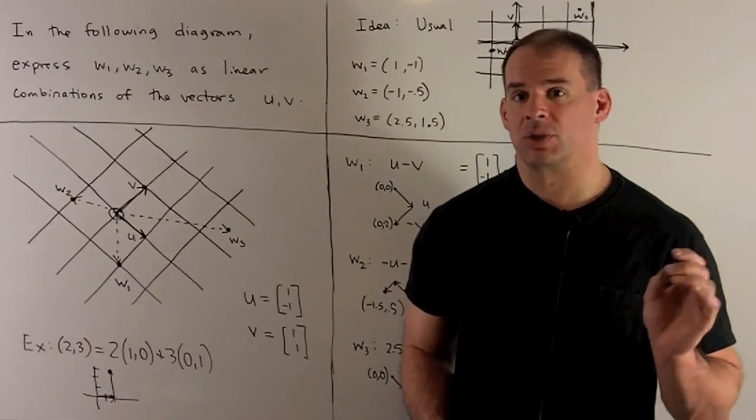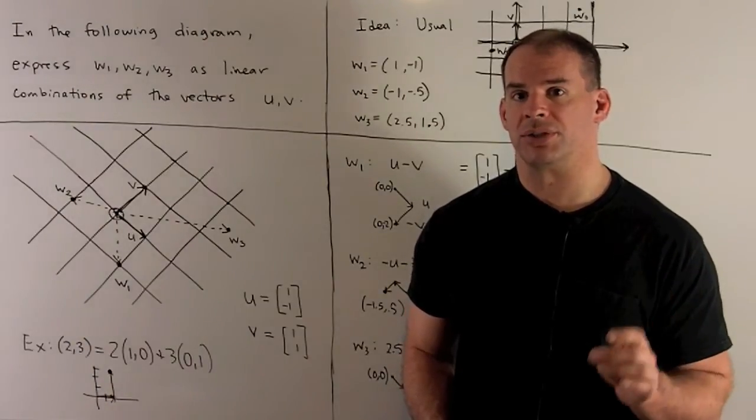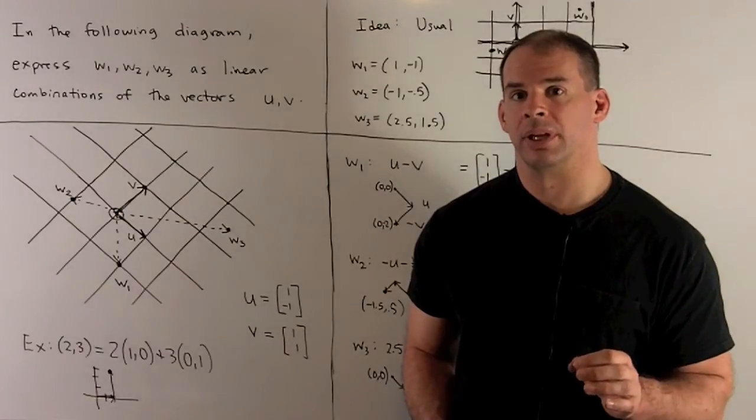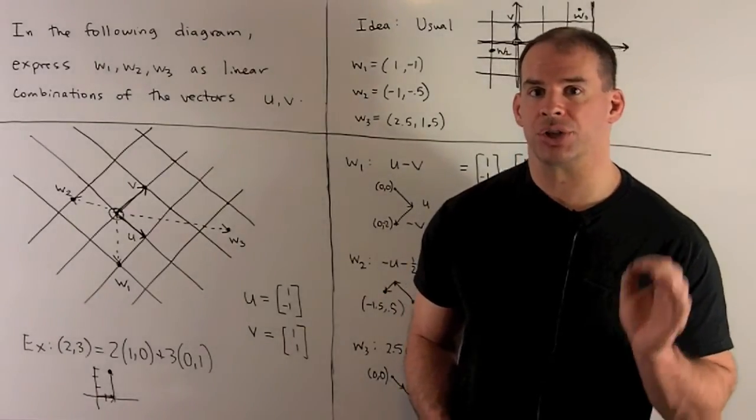Using the following diagram, express the vectors w1, w2, w3 as linear combinations of the vectors u and v.